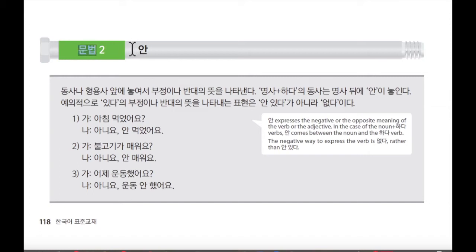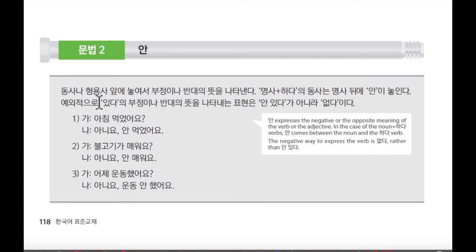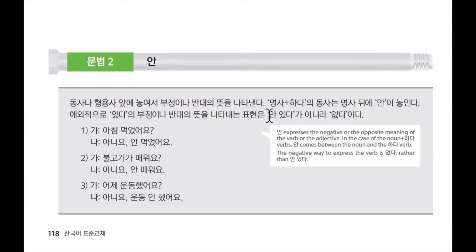문법, 두 번째, 안. 문법 is grammar. 동사나 형용사 앞에 놓여서 부정이나 반대의 뜻을 나타낸다. 명사 plus 하다의 동사는 명사 뒤에 안이 놓인다. 예외적으로 있다의 부정이나 반대의 뜻을 나타내는 표현은 안 있다가 아니라 없다이다.